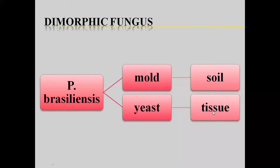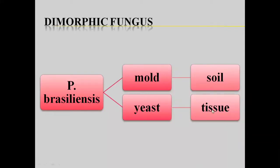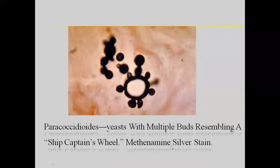Inside the human body, the organism changes morphology — it changes shape and grows as a yeast form. So these are two morphological forms existing in two different environments. They differentiate into two different shapes to survive. That is why these fungi are known as dimorphic fungi, existing in yeast and mycelium (mold) form.